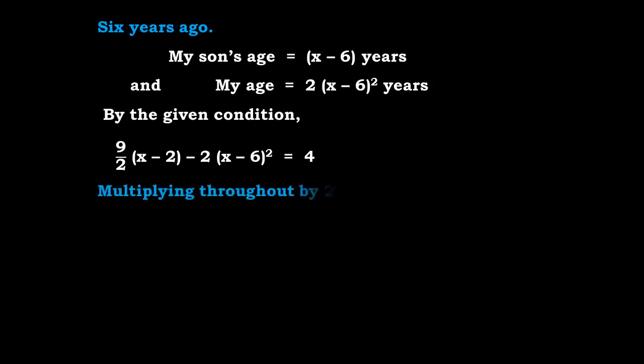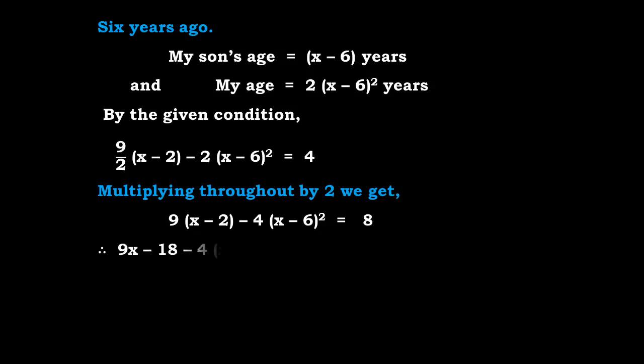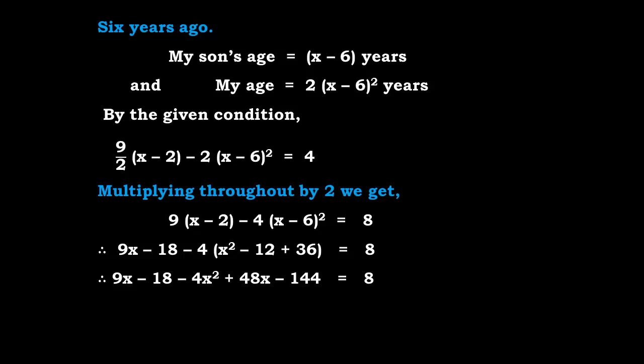Multiplying throughout by 2: 9 into x minus 2, minus 4 into x minus 6 the whole square, equals 8. Expanding: 9x minus 18 minus 4 times x square minus 12x plus 36 equals 8. Solving the bracket: 9x minus 18 minus 4x square plus 48x minus 144 equals 8. Simplifying: minus 4x square plus 57x minus 162 equals 8.